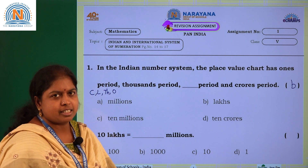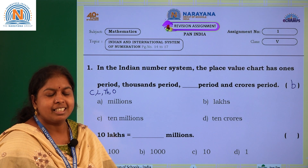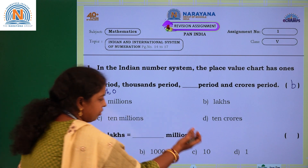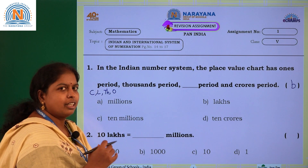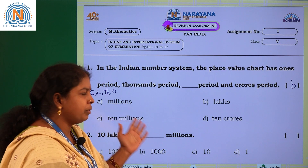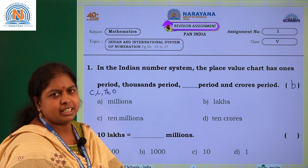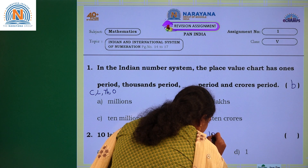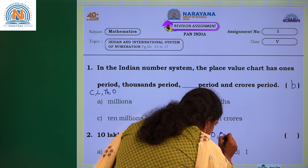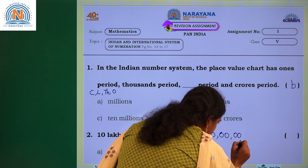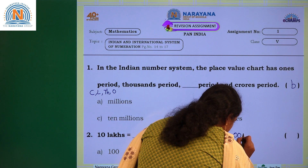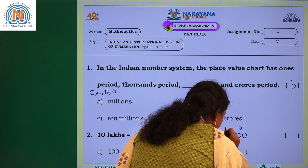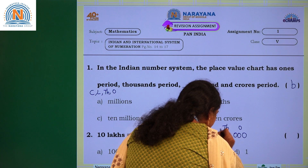Next question: 10 lakhs equals dash millions. First, let's write 10 lakhs, then convert it into millions. That means we are converting a number from the Indian numeration system to the international numeration system. Let us write 10 lakhs. In the ones period, I have three places: ones, tens, and hundreds place.